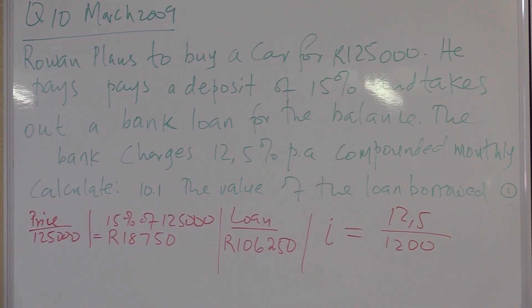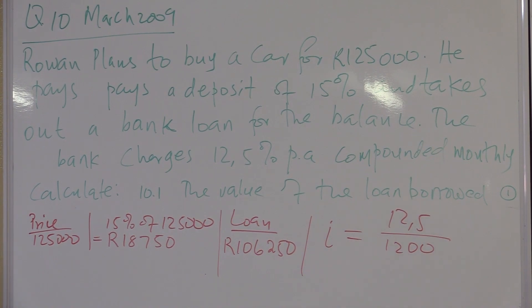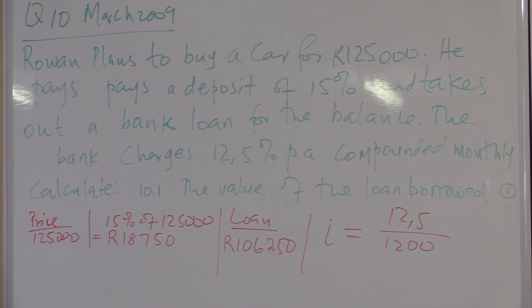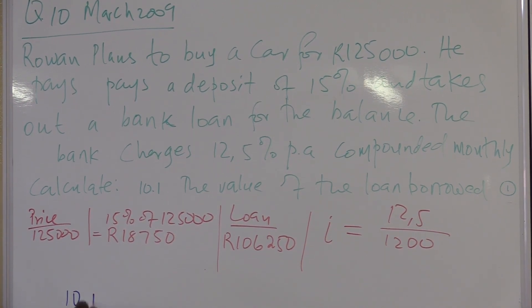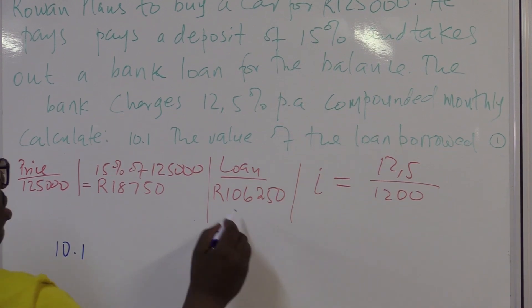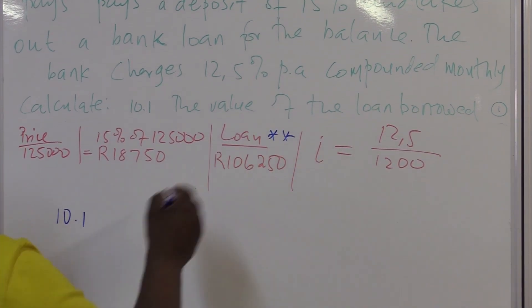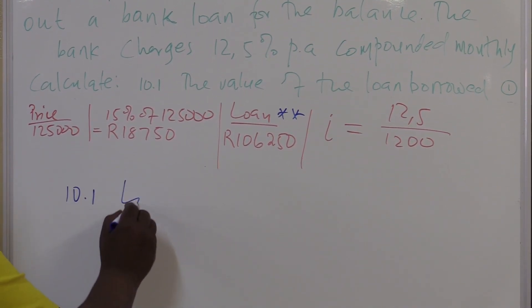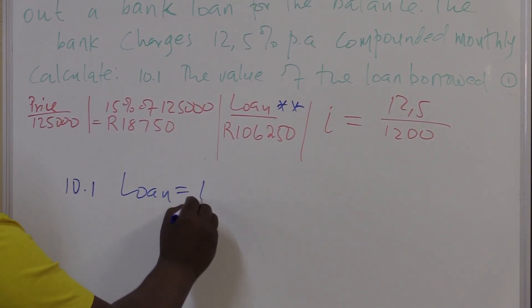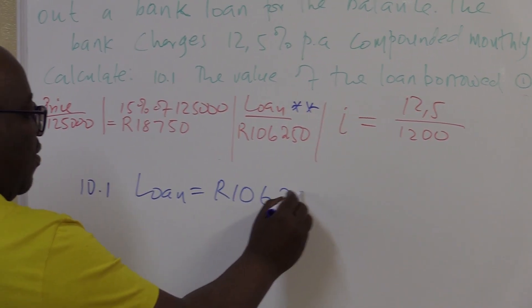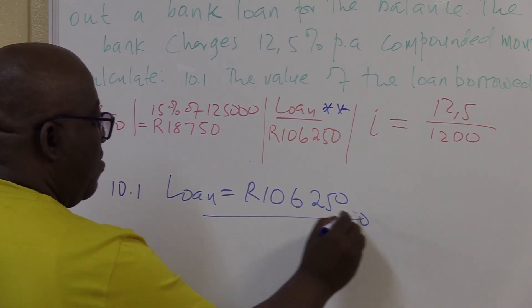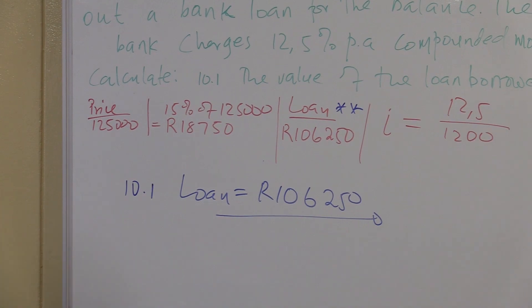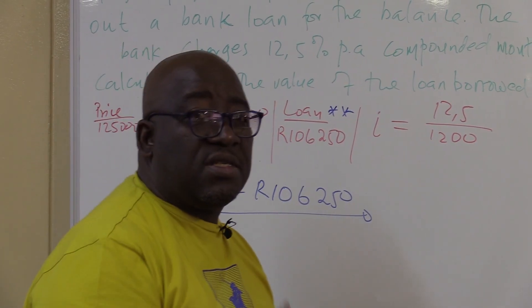The first question we've already answered. The question says, calculate the value of the loan borrowed. How much did he borrow? This is 10.1. Let's respond to 10.1. The value of the loan borrowed. We've already calculated as we're interpreting our data here. So the loan is equals to 106,250. This is what he needs to borrow from the bank.